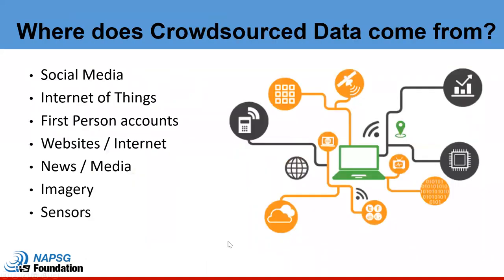FEMA's gotten into this game and we're using crowdsourcing to paint a better picture for situational awareness. Where does crowdsourced data come from? The first thing that usually pops in everybody's brains is social media — that is one major source. But we also get data from the internet of things, think of all our connected cars and refrigerators. First person accounts, open source websites and the internet in general, traditional news and media, and a lot of the crowd is tapping into imagery and remote sensing. The crowd is able to access anything that is open source.